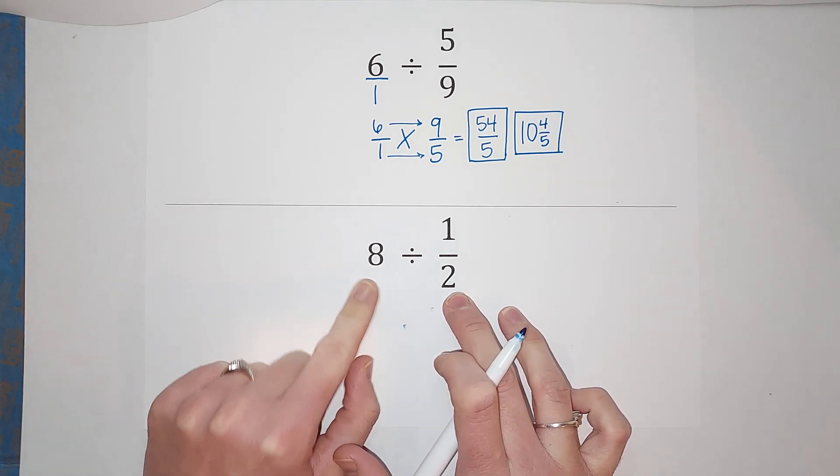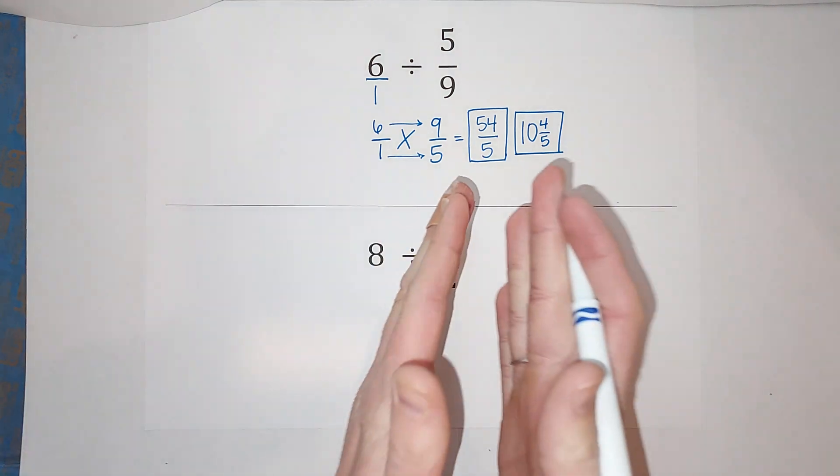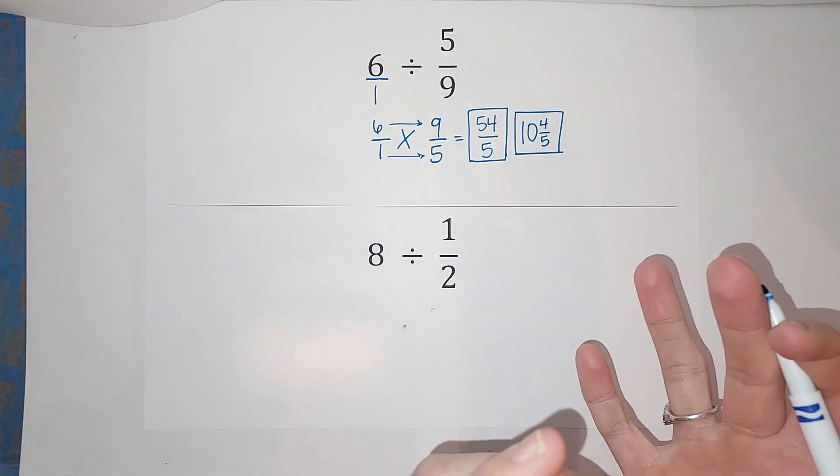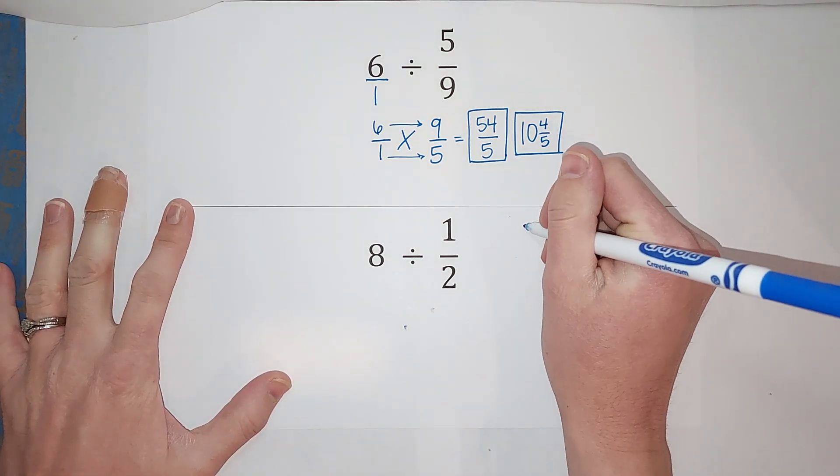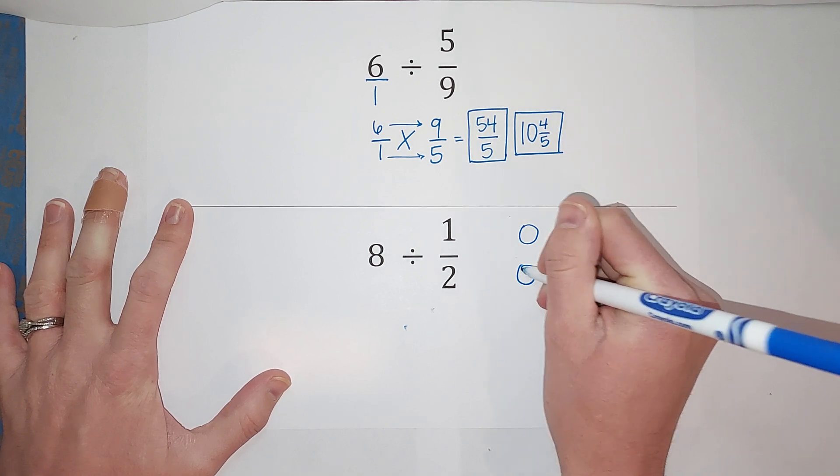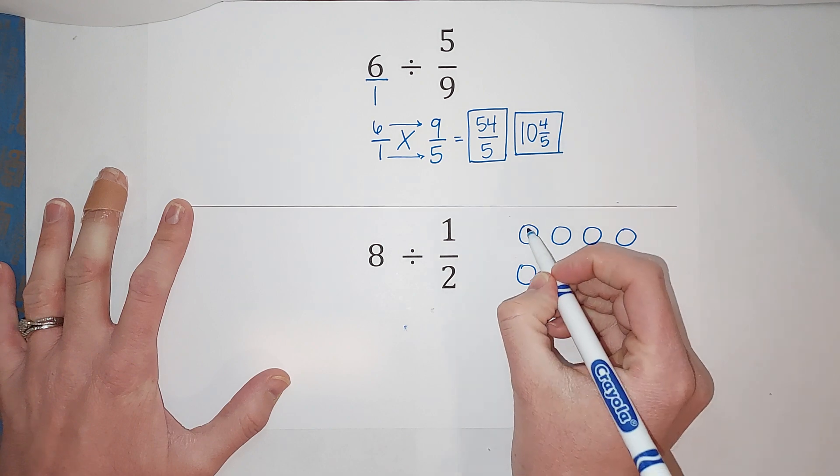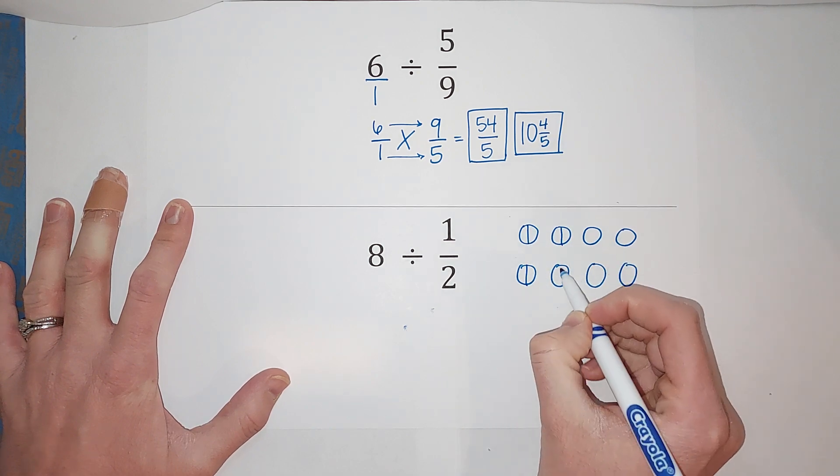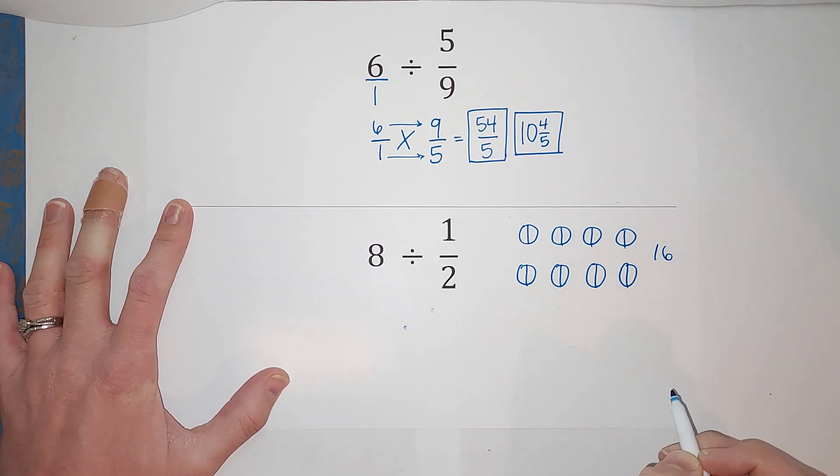So basically, if you had eight cookies, how many half cookies could you give to people? Did that make sense? Should I draw a picture? So I've got eight cookies, everybody gets half a cookie, you following? So if everybody gets half a cookie, how many halves are there? There's 16 halves, right?